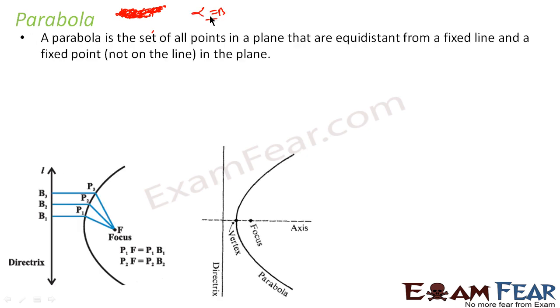Parabola is a conic section you get when alpha is equal to beta — we have seen that. Parabola can also be defined as a set of all points in a plane that are equidistant from a line. Please note, this is a fixed line.